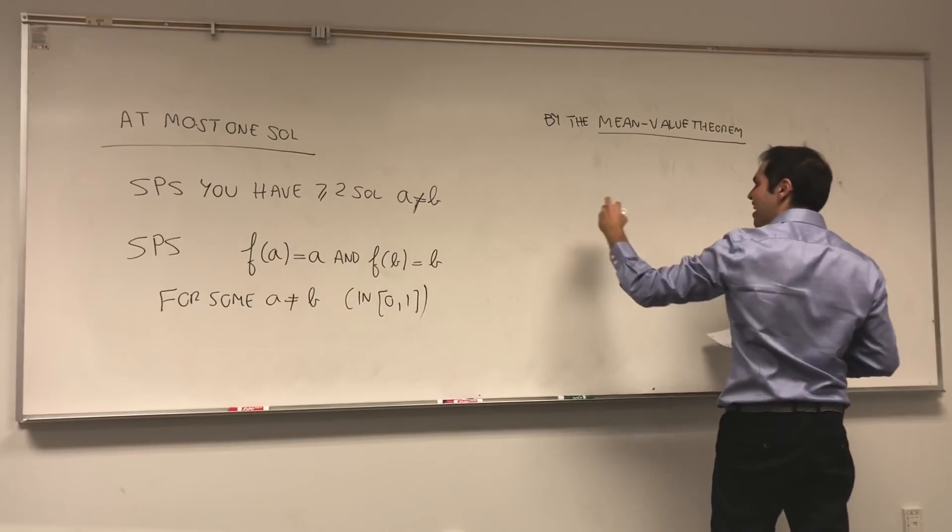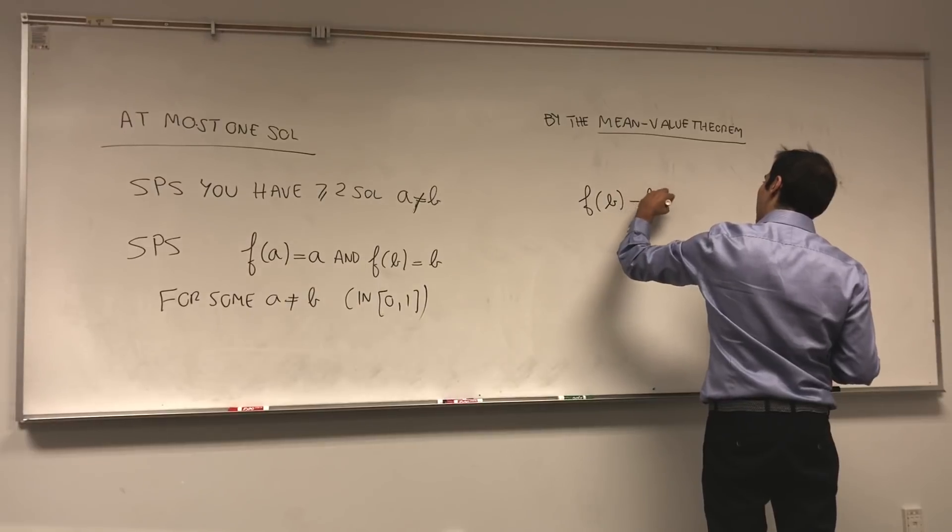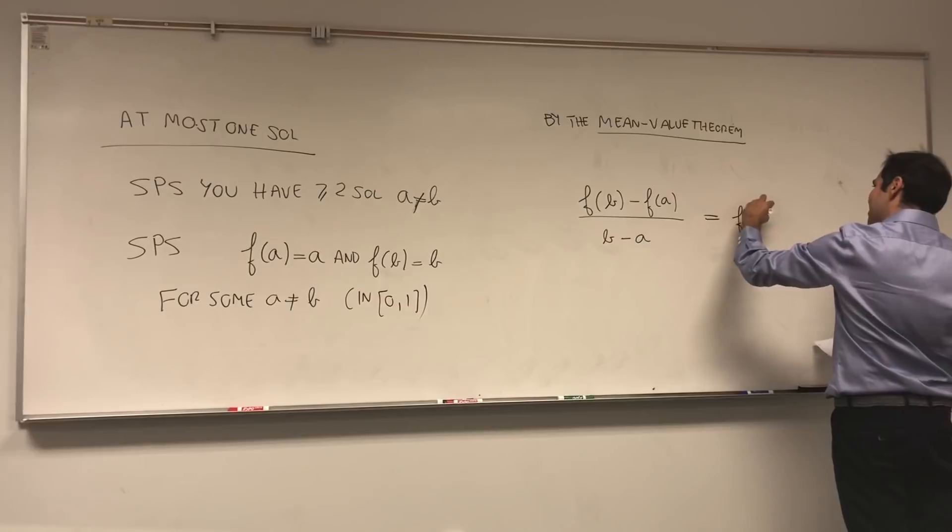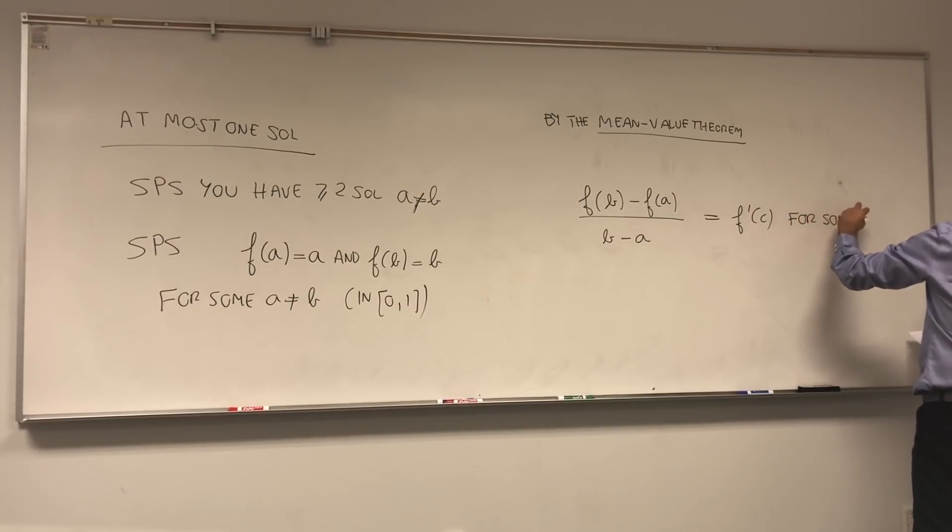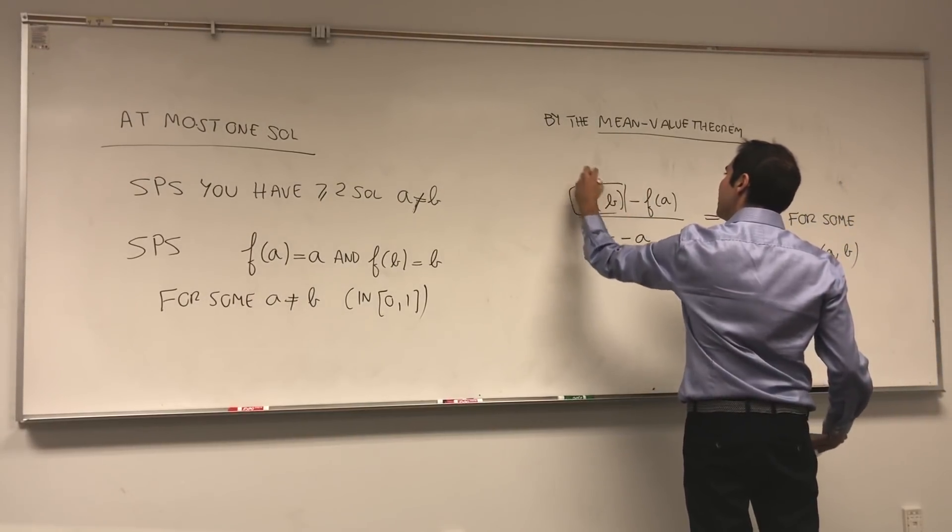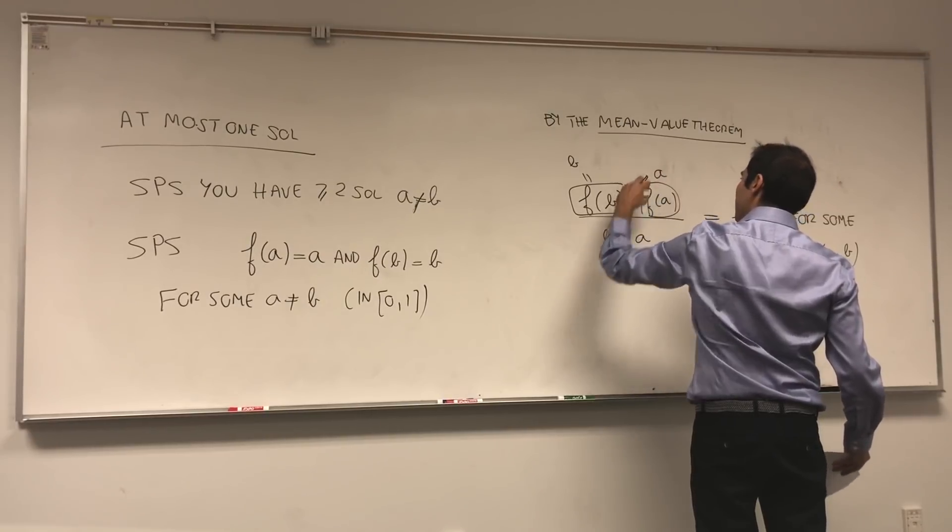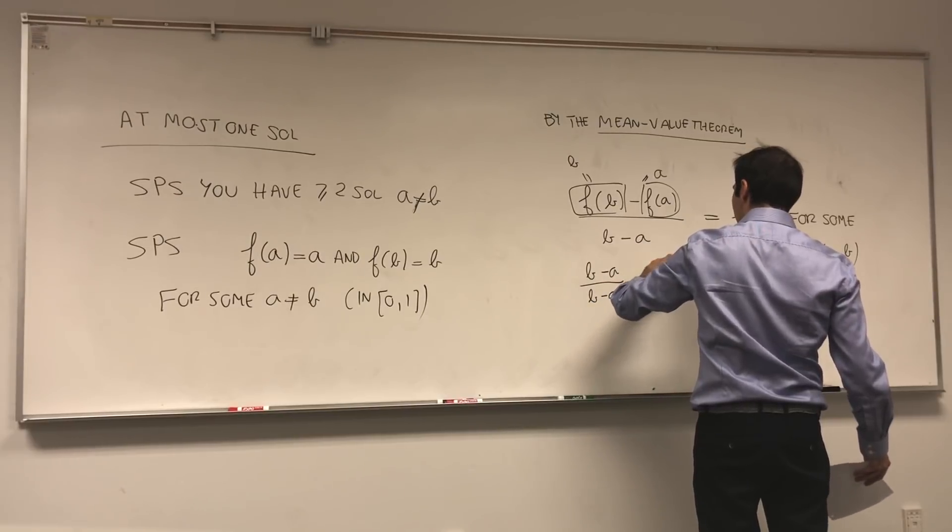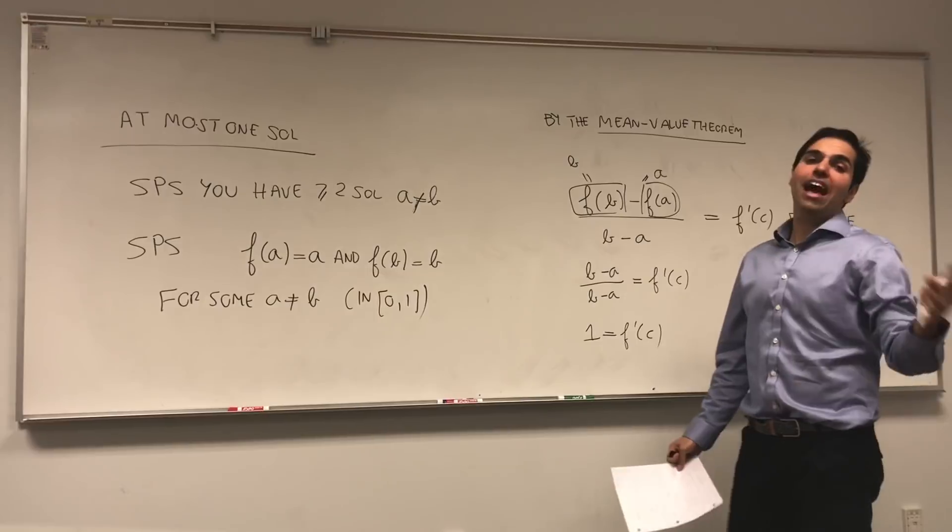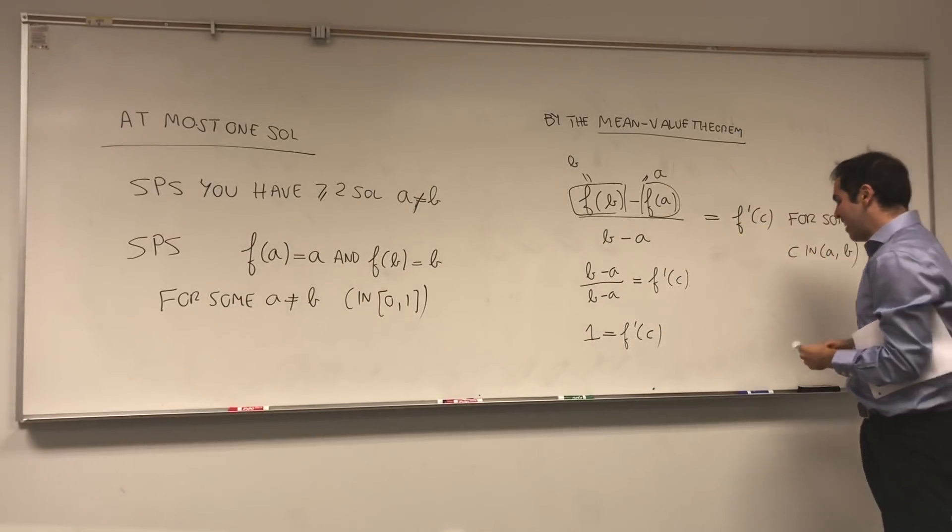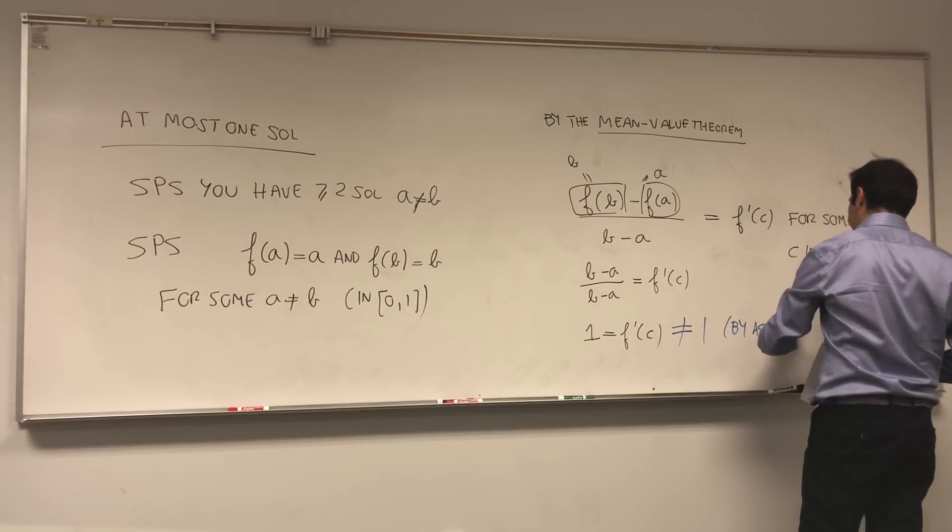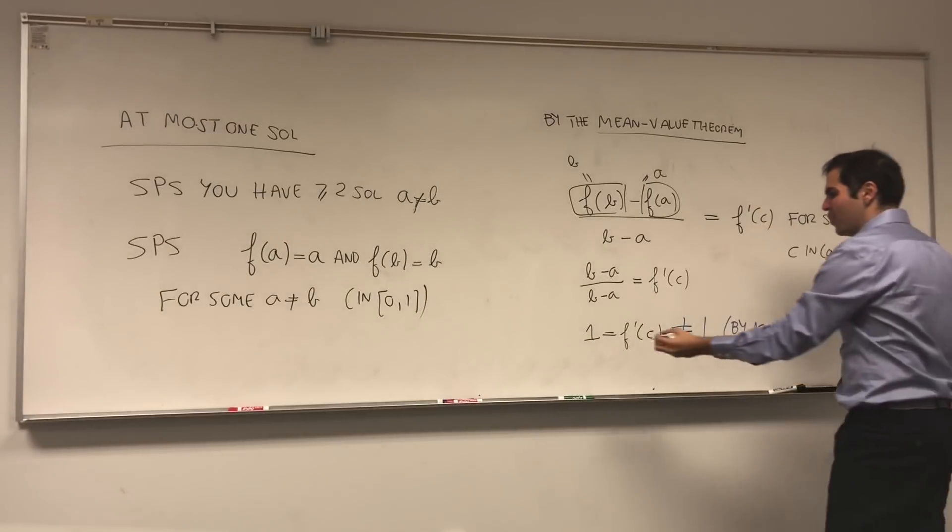Well, we have f(a) and we have f(b) and we know information about the derivative, so there's really just one thing to use. It's the mean value theorem. By the mean value theorem, what does it say? It tells you that the average value of f, [f(b) minus f(a)] over (b minus a), because the average change equals the instantaneous change at some point. So f'(c) for some c in (a,b). But what is f(b)? That's b. f(a), that's a. So you get (b minus a) over (b minus a) equals f'(c), and therefore 1 equals f'(c).